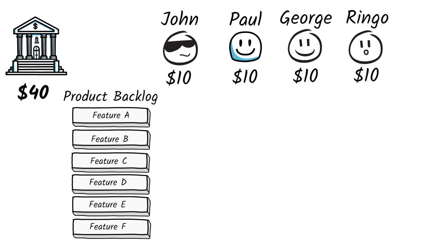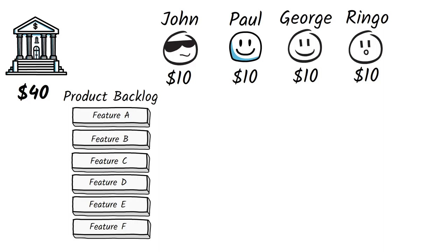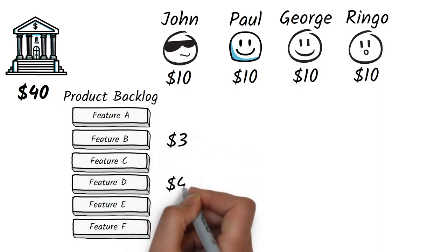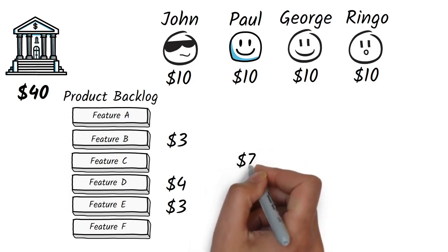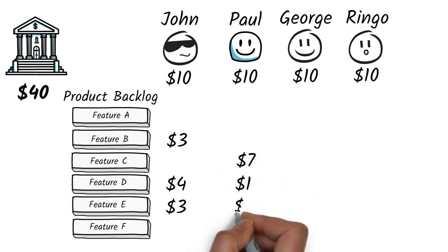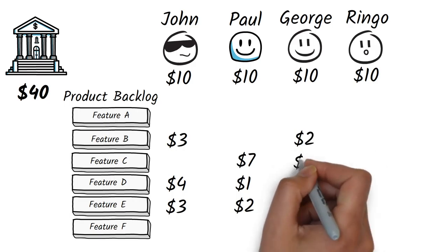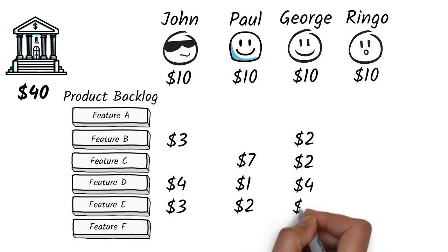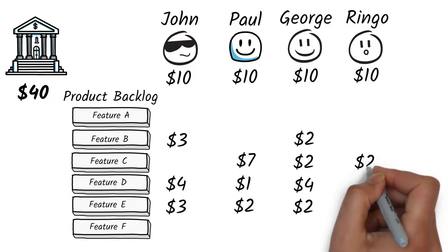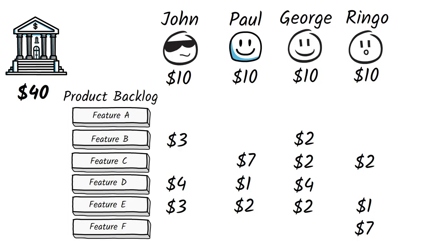The next step is to allow the stakeholders to bid their development dollars on backlog items. We allocate those development dollars equally because they have equal weighting, and then they can bid on whatever features they like. In our example, John has decided to spread his budget across features B, D, and E. Paul is really keen on feature C with a little interest in D and E. George mostly favours D but also wants B, C, and E, while Ringo really favours F with a little interest in C and E.